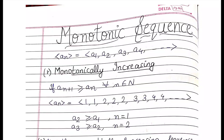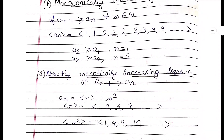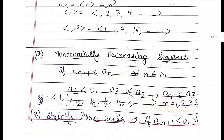Hello everyone, welcome to our channel. Today we are going to discuss the topic of monotonic sequences. We will study monotonic sequences. There are four types: monotonically increasing, strictly monotonically increasing, monotonically decreasing, and strictly monotonically decreasing.